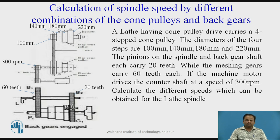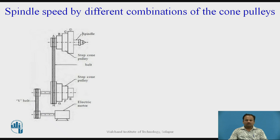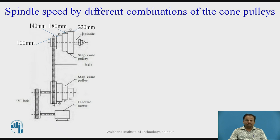In total, we are getting eight speeds. We will calculate the spindle speed by different combinations of the cone pulleys. In this particular figure, the belt is connected to position A and H of the pulley. In the given data, the diameters are 100 mm, 140 mm, 180 mm, and 220 mm. These are the diameters of the speed cone pulleys, and the counter shaft speed given is 300 rpm.